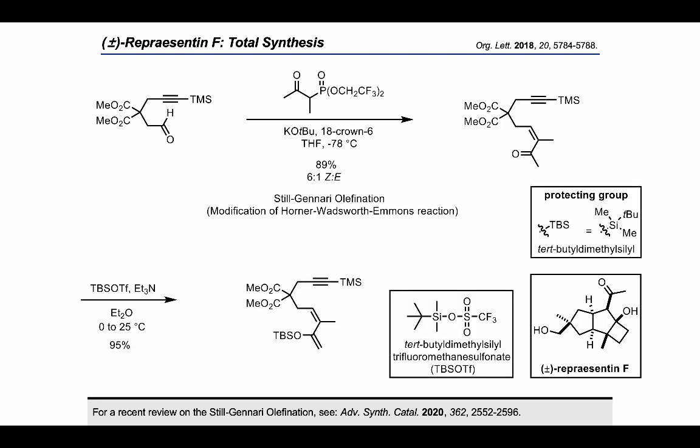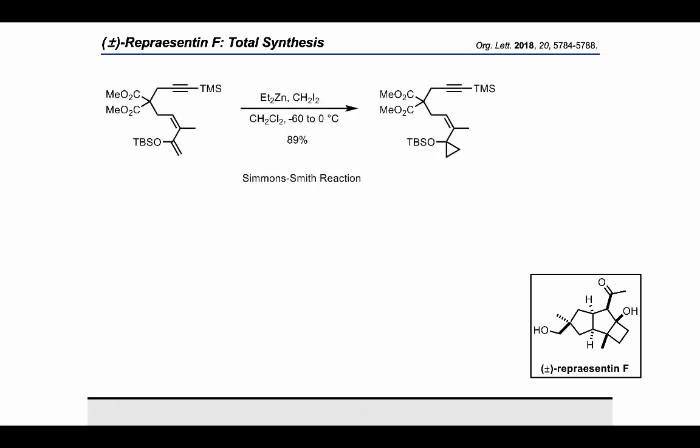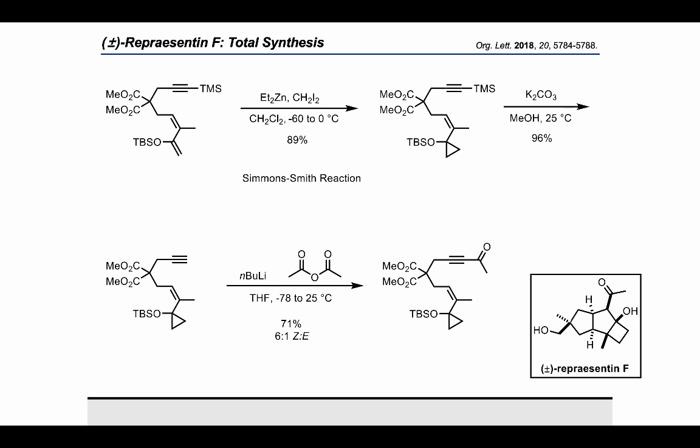Subsequently, the TBS enol ether was formed using triethylamine as base and tert-butyl-dimethyl-trifluoromethanesulfonate as silylating agent. The silyl enol ether was subjected to Simmons-Smith cyclopropanation conditions using diethyl zinc and diiodomethane to afford the corresponding cyclopropyl enyne. The trimethylsilyl protecting group was removed in basic conditions with potassium carbonate to give the free alkyne, which was then acetylated by lithiation and further reaction with acetic anhydride to afford the desired cyclopropyl-tethered 1,6-enyne.